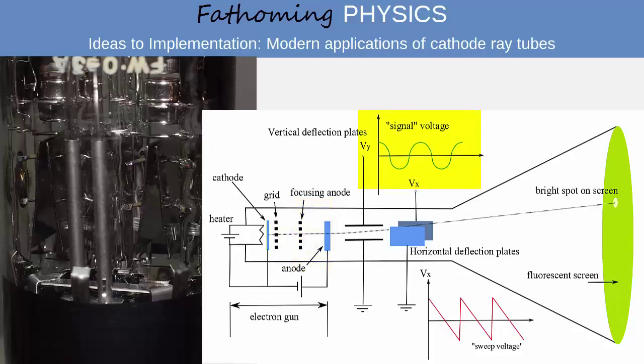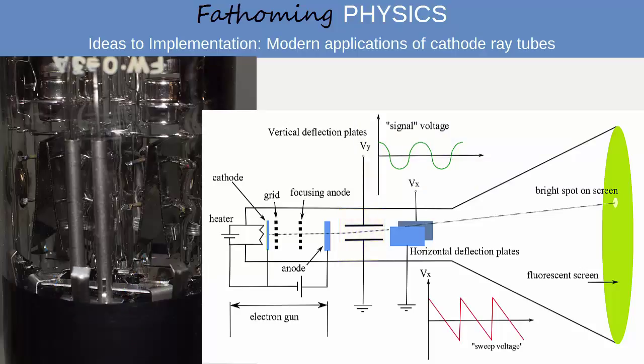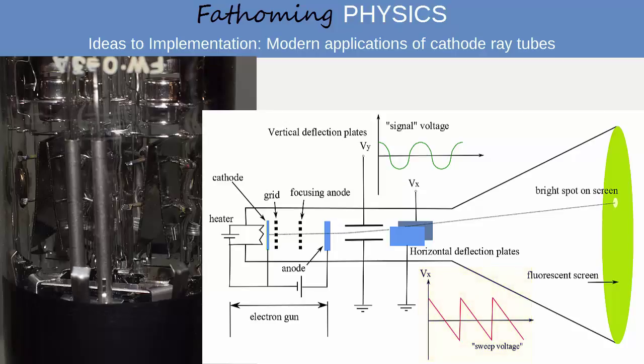The signal voltage that the user wishes to measure is applied between two parallel plates which become charged to produce a vertical deflection of the electron beam. Another set of parallel plates is orientated to produce a horizontal deflection. A voltage that changes linearly with time is applied between these plates to scan the beam gradually from left to right across the screen, before the beam jumps back to the left again.